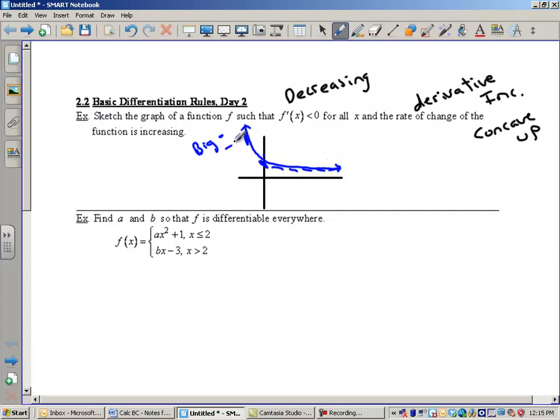So it could be like negative 5, negative 1, negative 1 half, almost zero. Those are increasing. All right.